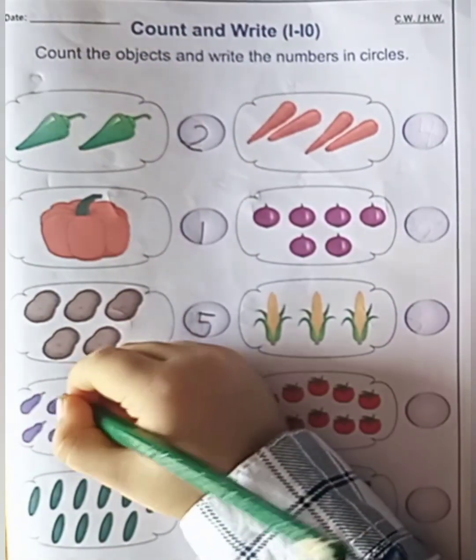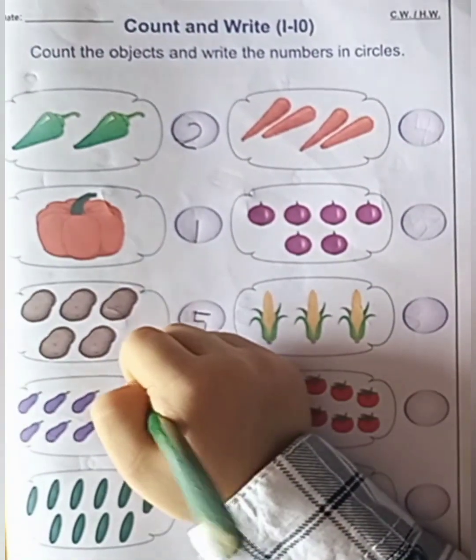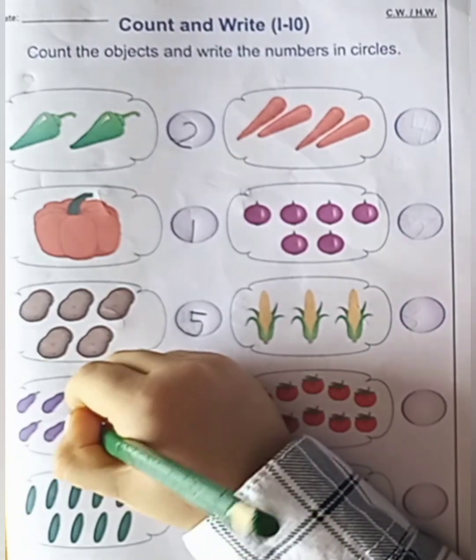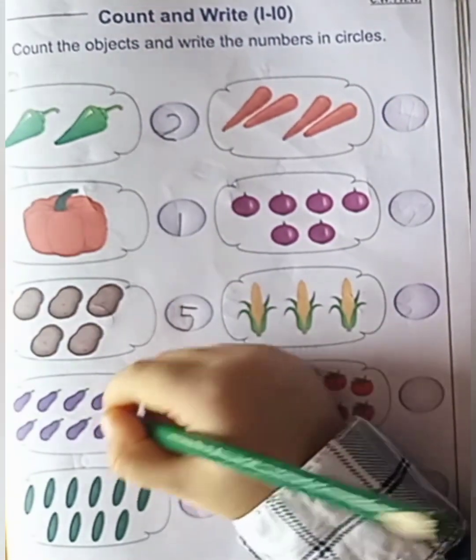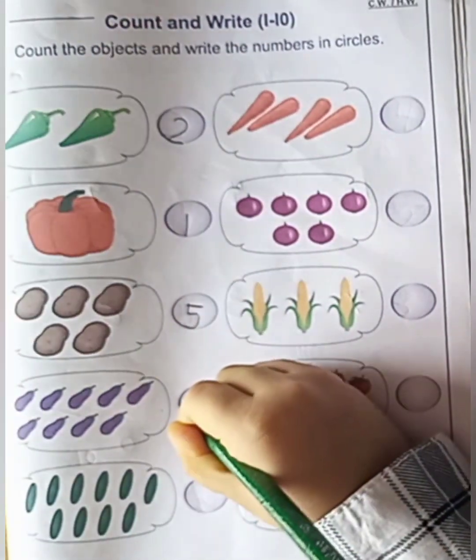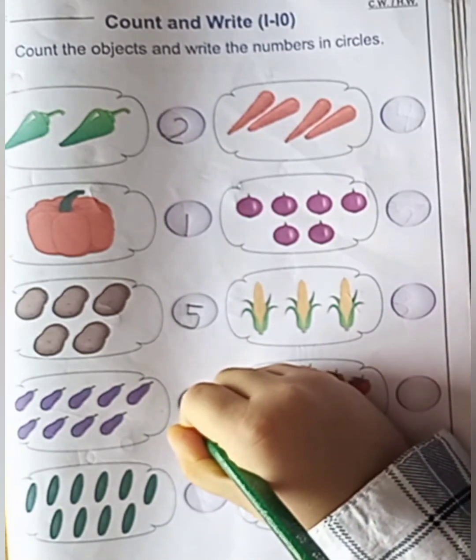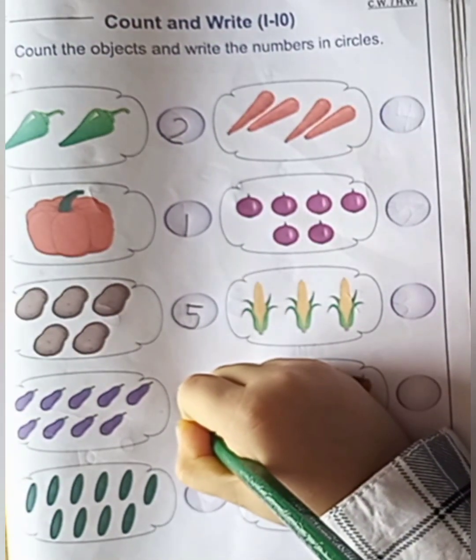Next. One, two, three, four, five, six, seven, eight, nine. What is this? Nine brinjals.